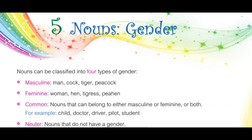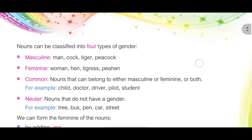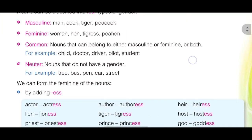Good morning children. Sangeeta ma'am here. Welcome again. Today we will discuss the 5th chapter of nouns, that is nouns gender. In our previous video of nouns we discussed about 4 types of gender: masculine gender, feminine gender, common gender, and neuter gender. We also discussed about formation of feminine nouns.